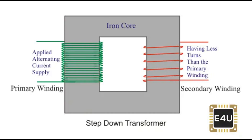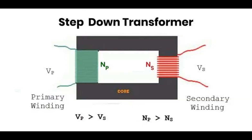The operation of a step-down transformer is also based on the principle of electromagnetic induction. When an alternating current flows through the primary coil, it generates an alternating magnetic field around it. This changing magnetic field induces an electromotive force (EMF), or voltage, in the secondary coil according to Faraday's Law of Induction. The ratio of the number of turns in the primary coil (N1) to the secondary coil (N2) determines the voltage transformation. The voltage transformation ratio K is given by K = N2/N1. If K is less than 1, it means that the secondary voltage V2 will be lower than the primary voltage V.